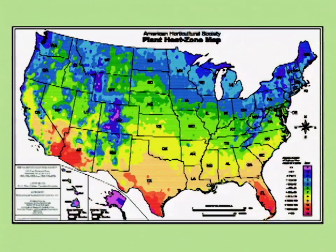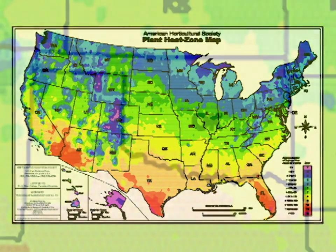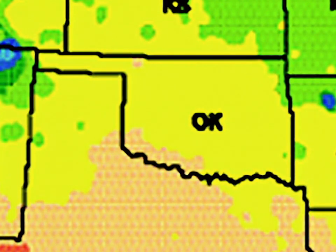Now one of the references we also have now is called a heat tolerance map, and this was developed by the American Horticultural Society. It has 12 zones, and these zones are based on the average number of days that are above 86 degrees. I believe that Oklahoma pretty much falls in zone 8 based on that map. This is just a general reference guide that still needs more detailed work, because in large urban areas temperatures can become much warmer where there's a lot of hardscapes — concrete and asphalt — and those things need to be taken into consideration also.